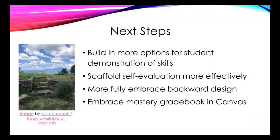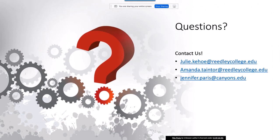For my next steps when I implement this again: I want to build in more options for student demonstrations of skills and really embrace Universal Design for Learning. I want to scaffold self-evaluation more effectively — by the end of the course they were pretty accurate, but in the beginning they definitely overrated how much they understood something. I want to more fully embrace backward design to ensure everything is covered equally and is well balanced. I also want to use the mastery gradebook in Canvas, because the regular gradebook doesn't work well for ungrading. Feel free to contact us — we love talking about this all the time.